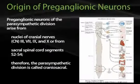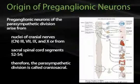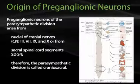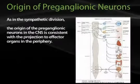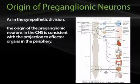The preganglionic neurons of the parasympathetic division arise from nuclei of cranial nerves 3, 7, 9, and 10, as well as sacral spinal cord segments S2 through S4. Therefore, the parasympathetic division is often referred to as craniosacral. As in the sympathetic division, the origin of the preganglionic neurons in the CNS is consistent with the projection to the effector organs in the periphery.